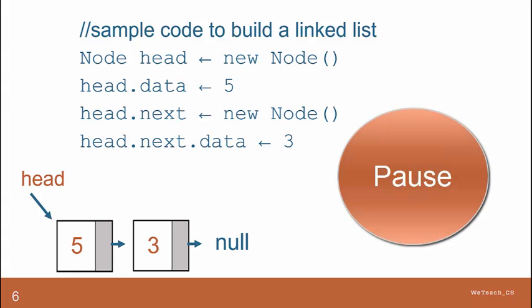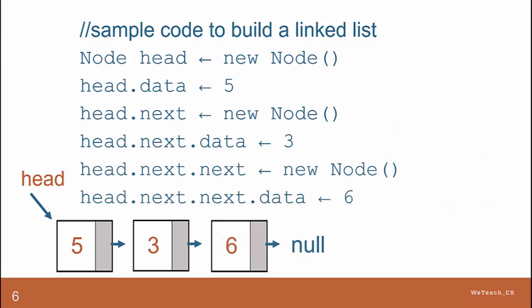Now think about how we add another node. Same idea, except now we have two references to next. Head.next.next gets new node. And then same thing with assigning the value six to it. So you can already see that it's getting a little bit more tricky and cumbersome to deal with processing these values.